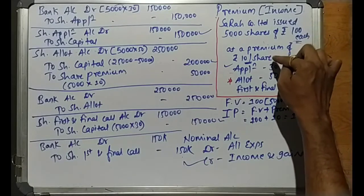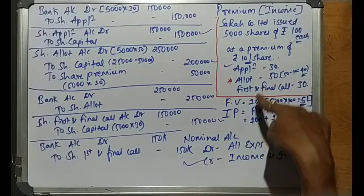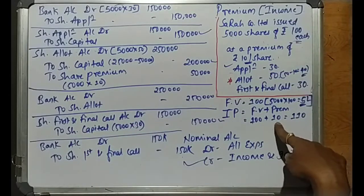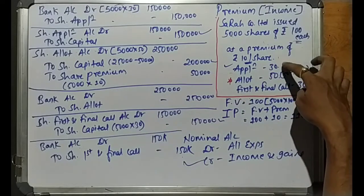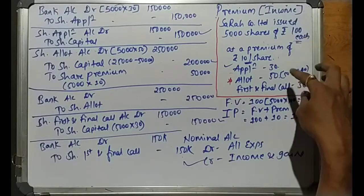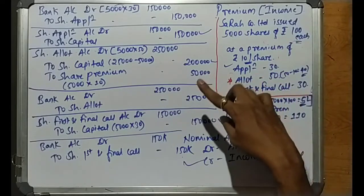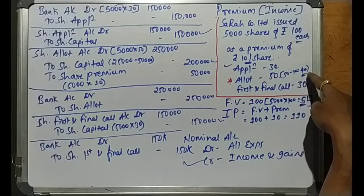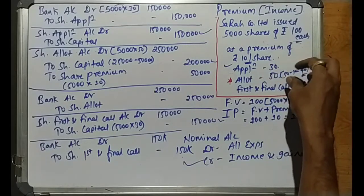So to summarize: this is share issue at premium. The premium is rupees 10 per share. Issue price equals face value plus premium: 100 plus 10 = 110. The premium is extra income for the company. The amount is collected in stages — application 30, allotment 50, first and final call 30 — totaling 110. If no specific instructions, the premium is adjusted at the allotment stage.